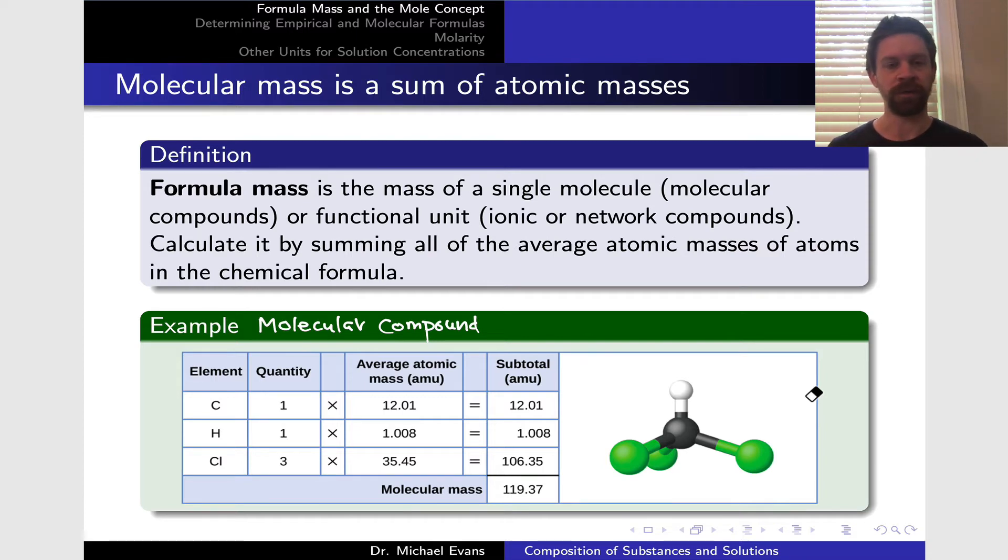An example of a molecular compound is shown on this slide. The compound here is chloroform, with molecular formula CHCl3. For molecular compounds, we use that molecular formula to calculate the formula mass by adding up all those atomic masses. So 12.01 for the carbon atom, 1.008 for the hydrogen, and 35.45 for chlorine, multiplied by three since there are three chlorines. The total is 119.37. The units are atomic mass units, or amu.